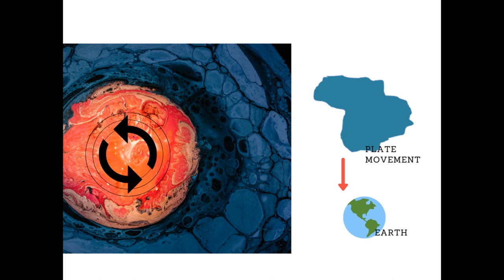These plates move a few millimeters every year, and it happens due to Earth's internal movement. Inside our Earth there lies molten magma, which is nothing but a hot liquid. The molten magma rotates in a circular manner, and this constant motion of the molten magma makes the lithospheric plates move.